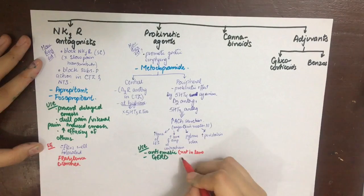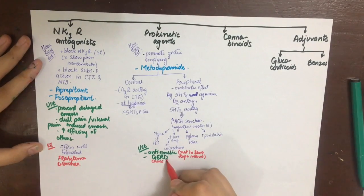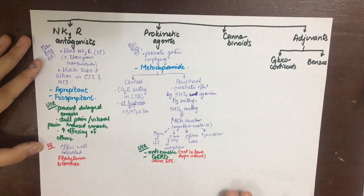Prokinetic agents have other uses as well apart from antiemetic action. They are used in GERD gastroesophageal reflux disease, but they cause extrapyramidal symptoms so they have been replaced by proton pump inhibitors and H2 blockers. They can be given in diabetic gastric stasis, post-operative gastroparesis, or idiopathic gastroparesis. They increase gastric emptying to perform gastrointestinal radiological procedures and also before general anesthesia in emergencies.